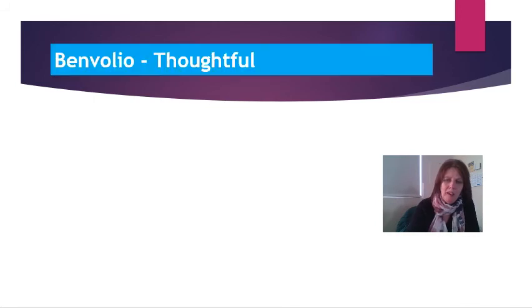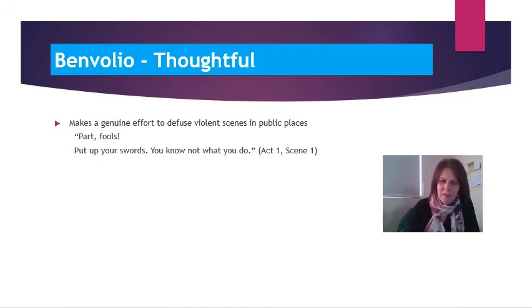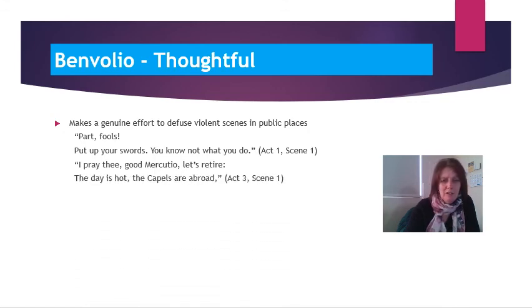Now let's take a look at Benvolio — remember he is pretty much the only male character in Romeo and Juliet who we do not see publicly being aggressive. I'm going to sum him up with the word thoughtful. Thoughtful because he makes a genuine effort to diffuse violent scenes in public places: right from Act 1 Scene 1 we see him trying to encourage the servants of both households to disperse and put away their weapons, and later in Act 3 Scene 1 he encourages Mercutio to retire, noting the day is hot, passions running high in Verona, with the Capulets nearby.